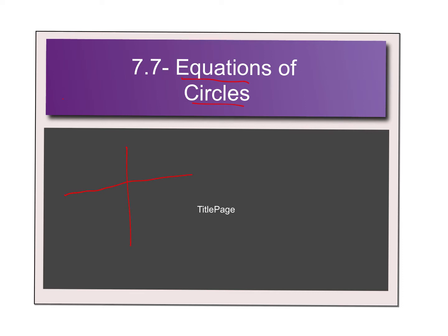So if I've got a coordinate plane, if I have a graph and I have a circle within that graph, how does that work? How do I know where the center is? How do I know what the radius is? How does that all work within the umbrella?